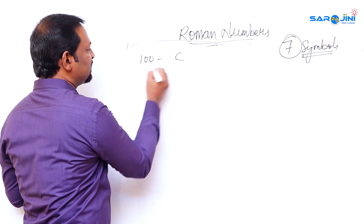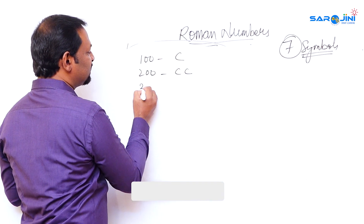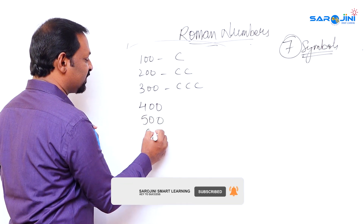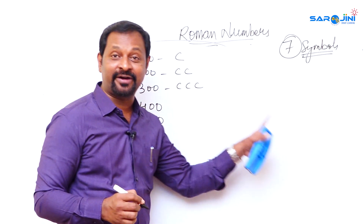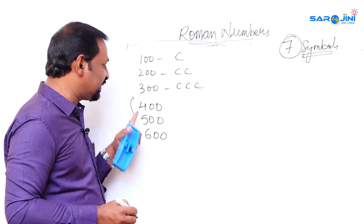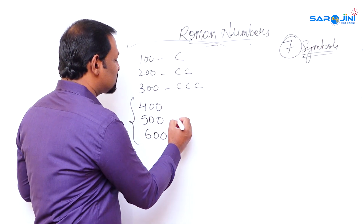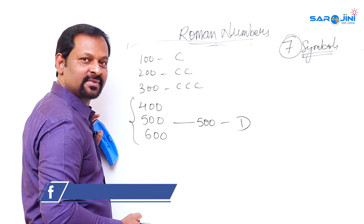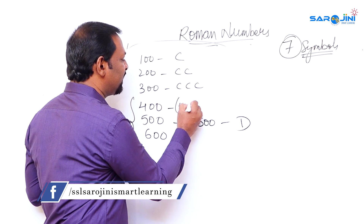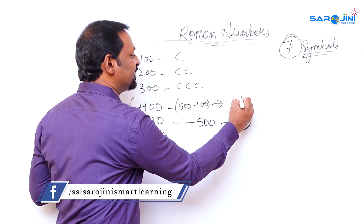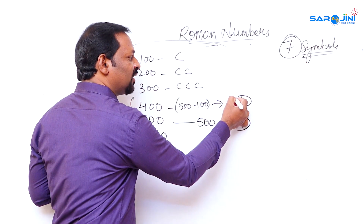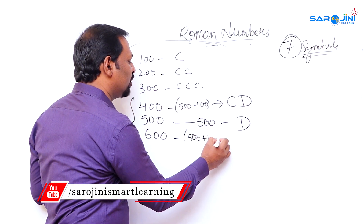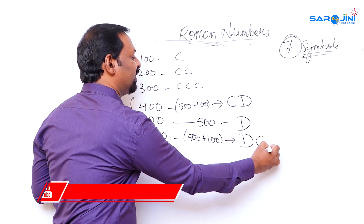For one hundred it is C, two hundred is CC, three hundred is CCC. For four hundred, five hundred, and six hundred, the same four-five-six logic applies. Five hundred's symbol is D. Four hundred is five hundred minus one hundred, written as CD. Six hundred is five hundred plus one hundred, written as DC.